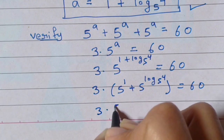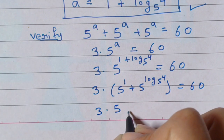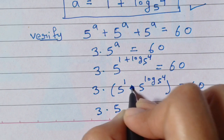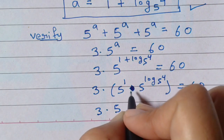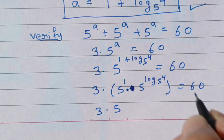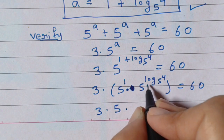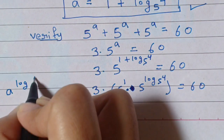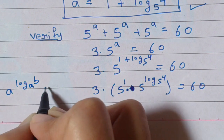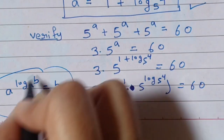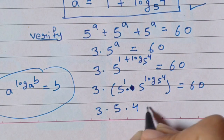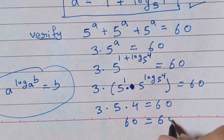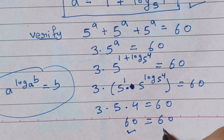So 3 into 5 times 5 to the power log 4 to the base 5. We know that a to the power log b to the base a is equal to b. Using this formula, 5 to the power log 4 base 5 equals 4. So we get 3 into 5 into 4 is equal to 60. So 60 is equal to 60 — left hand side is equal to right hand side. Verified.